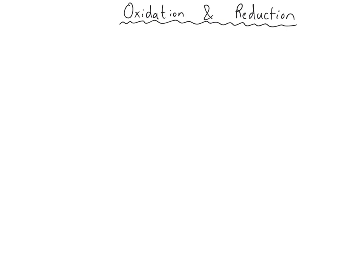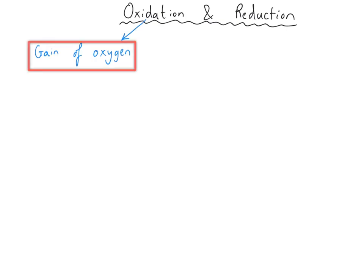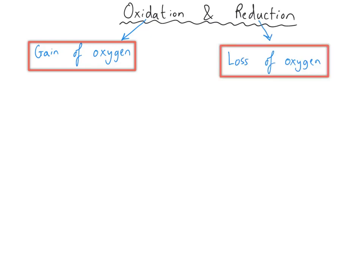I want to begin this video by revisiting two definitions that we explored in an earlier video: oxidation and reduction. Oxidation, which we encountered in the context of burning metals to make metal oxides, is taken to be the gain of oxygen. And reduction, that we encountered in terms of taking oxygen away in metal extraction, is taken to be the loss of oxygen. But these aren't the only definitions for oxidation and reduction.